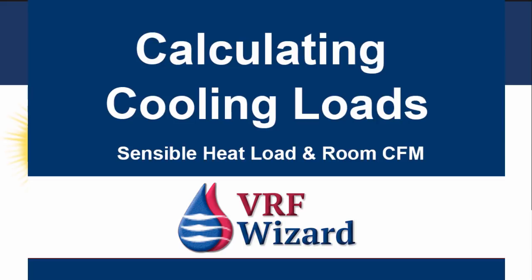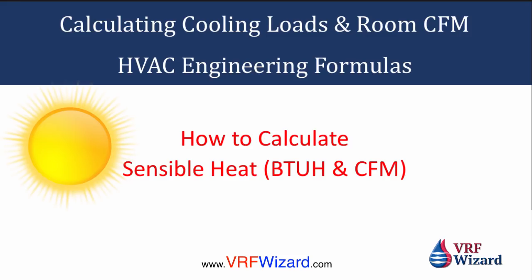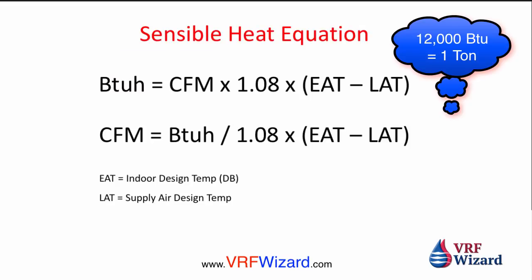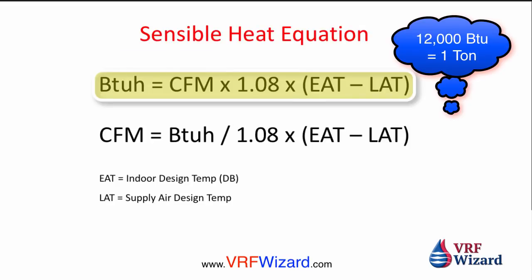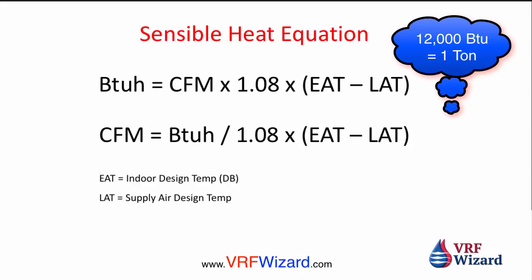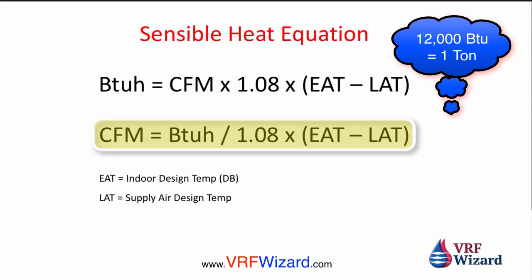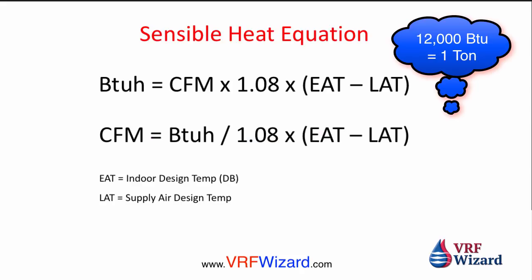We're going to cover how to calculate cooling loads, and then once you have your cooling load you can figure out how much CFM is required. This is based on sensible heat — these are your sensible heat equations. We're going to figure out BTUs per hour first, and from there we can determine how much CFM we're going to need for the room. Our indoor design temperature — the entering air temperature — is 75°F, and our supply air design temperature is 55°F.